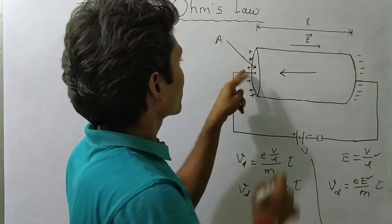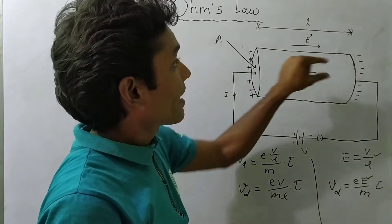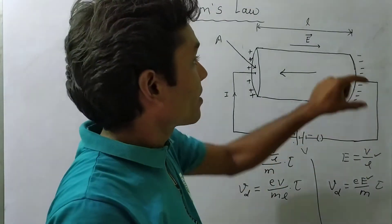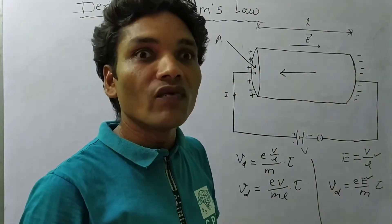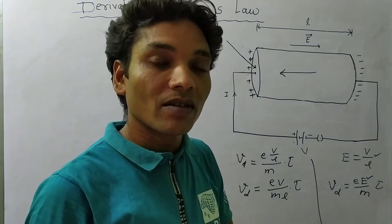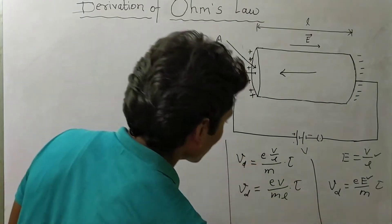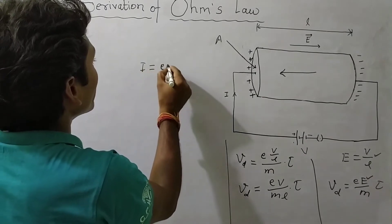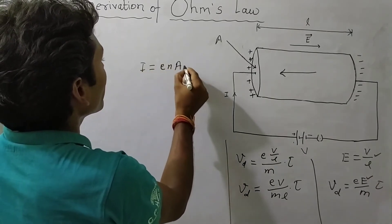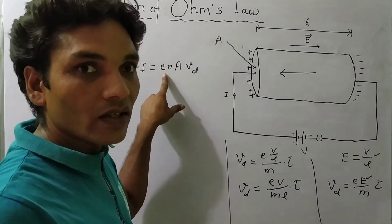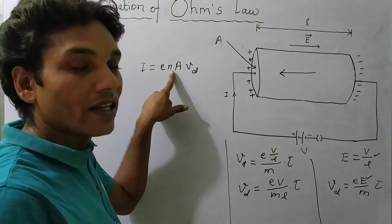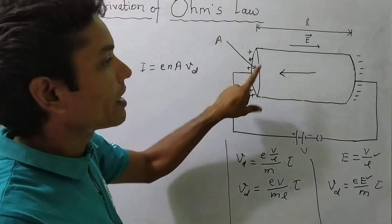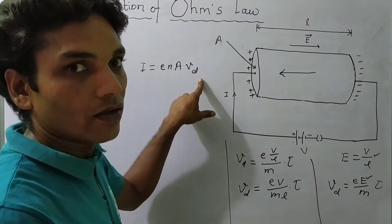Electrons are drifted towards the positive phase. Since electrons are charged particles, charge is moving, and when charge is moving, electric current is developed. The electric current flowing through the conductor is I = nAeVd, where e is the charge on an electron, n is the number of free electrons per unit volume, A is the cross-sectional area, and Vd is the drift velocity.